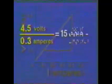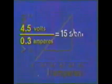A volt per ampere is called an ohm. So our heating element is a 15 ohm resistor. The resistance of a resistor is a special characteristic that doesn't change when it's placed in another circuit. To get a current of one ampere to flow through a 15 ohm resistor will take a potential difference of 15 volts. In a circuit with a potential difference of only 1.5 volts, the current will be 0.1 amperes.